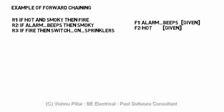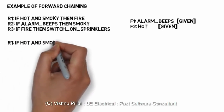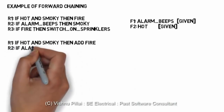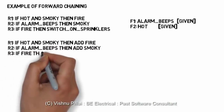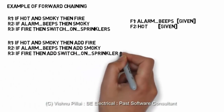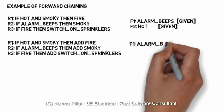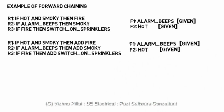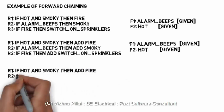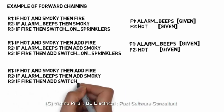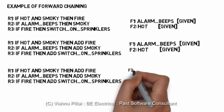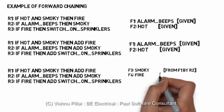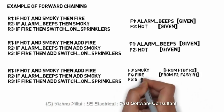A simple example of forward chaining based on a fire sprinkler: the rules can be written as — if it is hot and smoky, then you can conclude there is a fire; if there is fire, the system has to switch on sprinklers. Whenever a sensor detects fire or smoke, the expert system comes into action. It stores facts like the alarm has beeped and it is hot, and those two facts are stored in the working memory. The inference engine then uses those facts to drive the next steps.